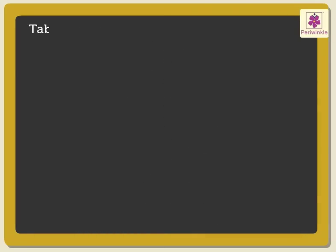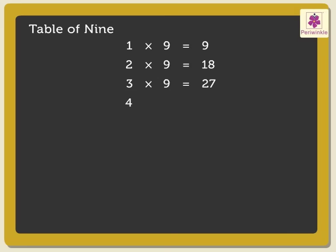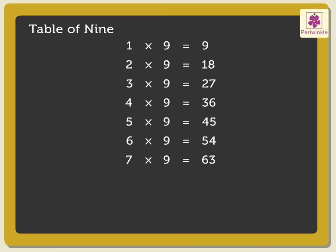Next is the table of 9. 1 nine is 9. 2 nines are 18. 3 nines are 27. 4 nines are 36. 5 nines are 45. 6 nines are 54. 7 nines are 63. 8 nines are 72. 9 nines are 81. 10 nines are 90.